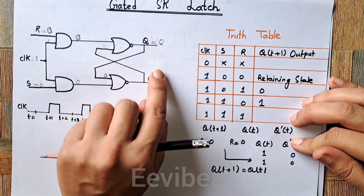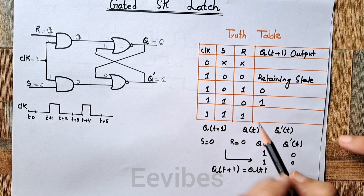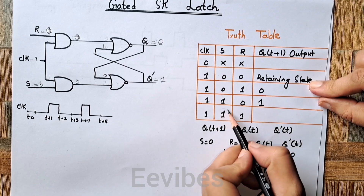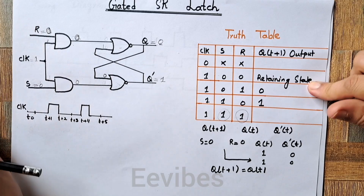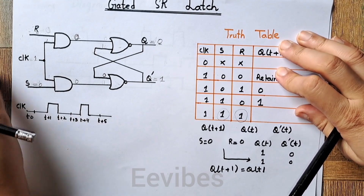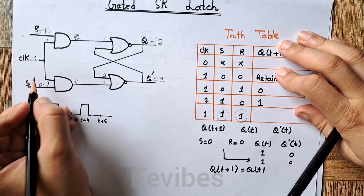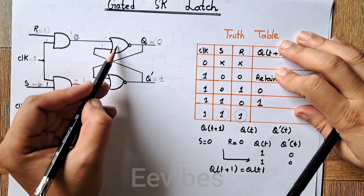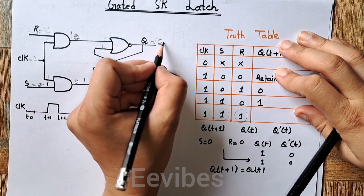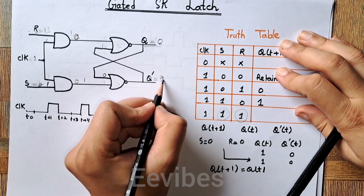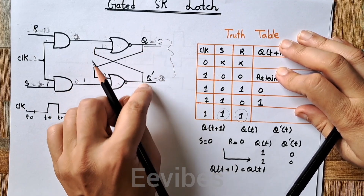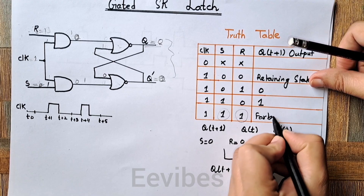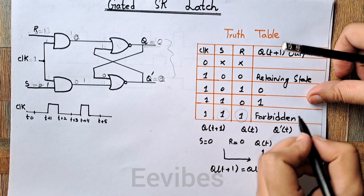Now we are left with the case when S and R are both equal to one. When both S and R are equal to one with clock equal to one, both AND gates produce one. Since one input of each NOR gate is equal to one, both are forced to produce output equal to zero. So Q equals zero and Q-complement also equals zero, which is technically not valid — we want complemented outputs. These are forbidden states and we should not switch both inputs to one.